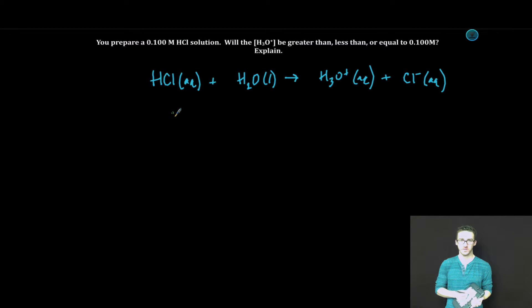To answer this question, recognize that the hydronium ion concentration is going to be equal to the concentration of my initial hydrochloric acid solution. In other words, it's going to be equal to 0.100 molar.